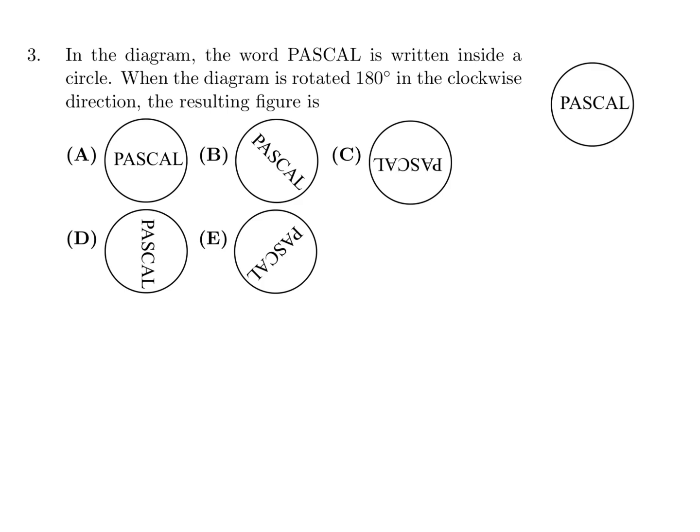In the diagram, the word Pascal is written inside a circle. When the diagram is rotated 180 degrees in the clockwise direction, the resulting figure is. Let's draw a circle, draw a center and draw a little arrow that points to the top. Then you're going to take that arrow and go 180 degrees like that, so the arrow will point downwards. Then write Pascal on your piece of paper, and when the arrow is pointing downwards, flip your page around and see what it looks like. Of the answer choices, the one that is like that is C.